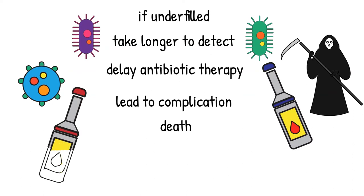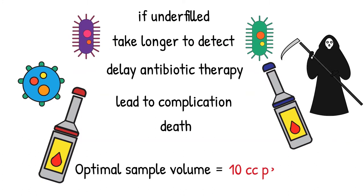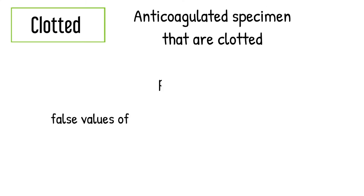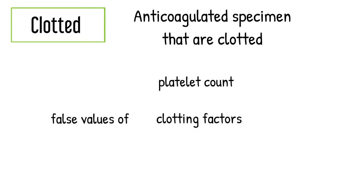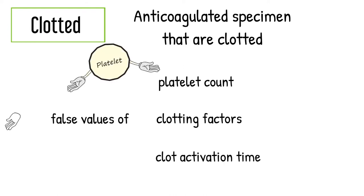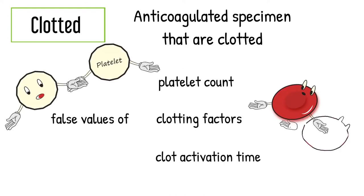The optimum volume for adult patients is 20cc for both bottles, not to exceed 10cc per bottle. Anticoagulant specimens that are clotted. Clotted specimens can change the test value such as platelet count, clotting factors, and clot activation time.